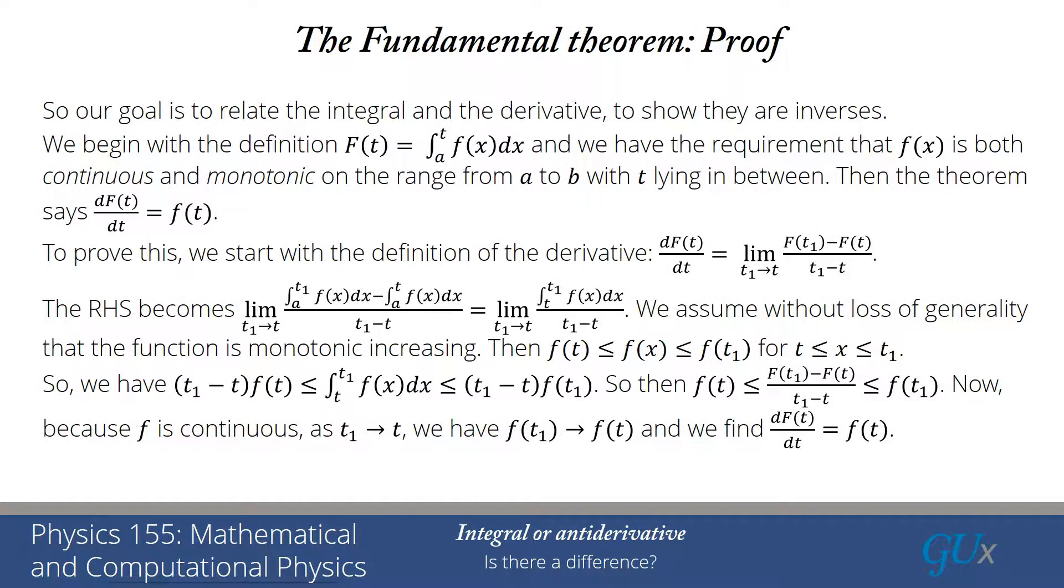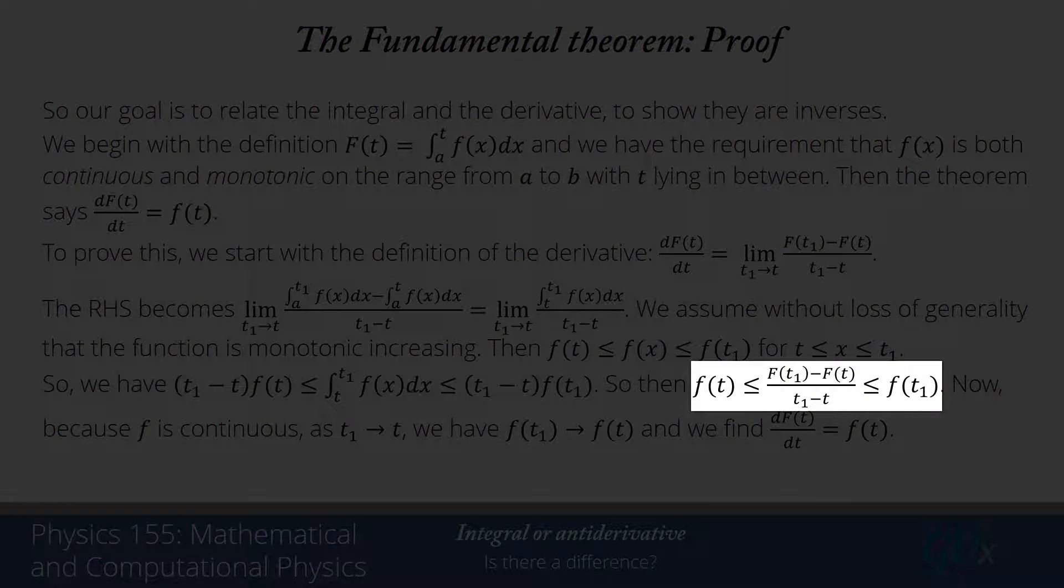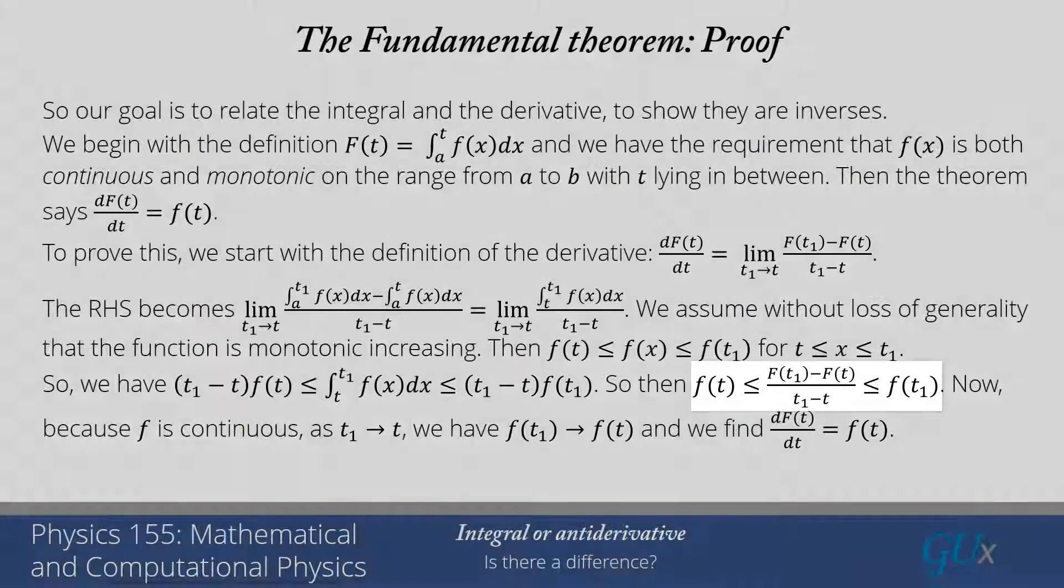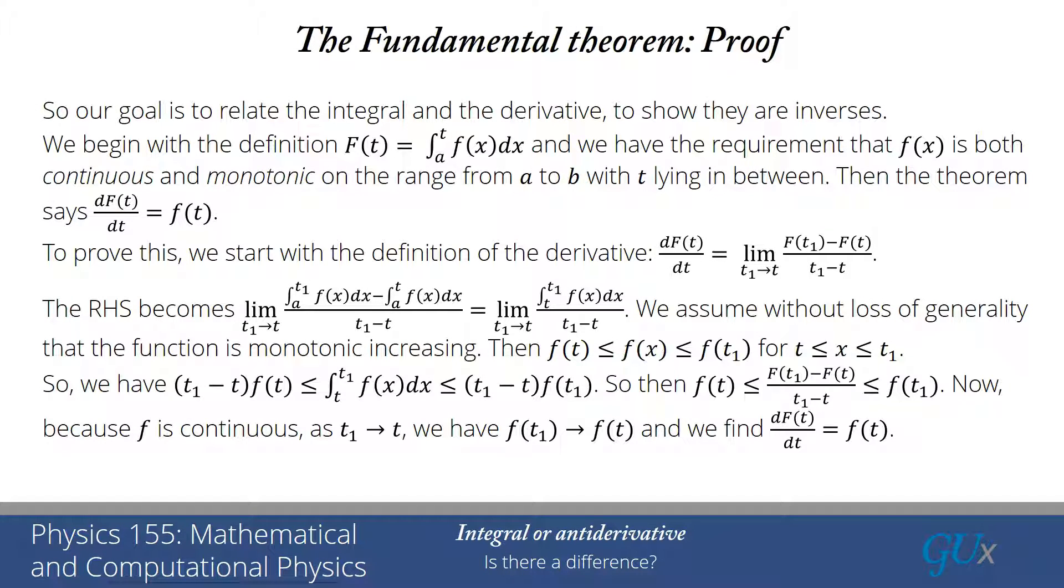So from that, if we divide both sides now by t1 minus t, what we see is f(t) is less than or equal to [F(t1) - F(t)] / [t1 - t]. And that will be less than or equal to f(t1). Now what we're going to do is we're going to take the limit as t1 approaches t. The object on the middle will approach the derivative.